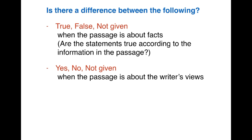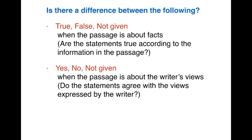The reason they say Yes or No instead of True or False is because the question asks: do the statements agree with the views expressed by the writer? The words Yes and No answer that question directly — Yes, they agree, or No, they don't agree. That's why we write Yes or No instead of True or False for this type of question.